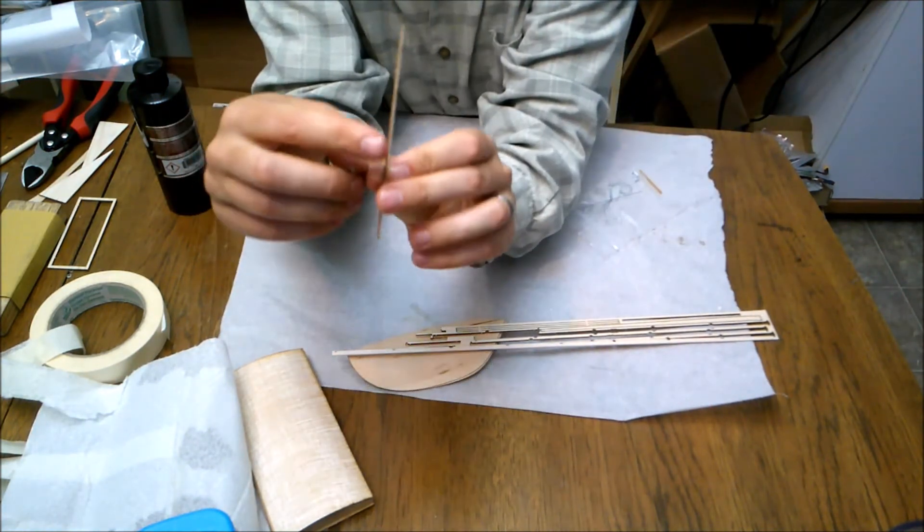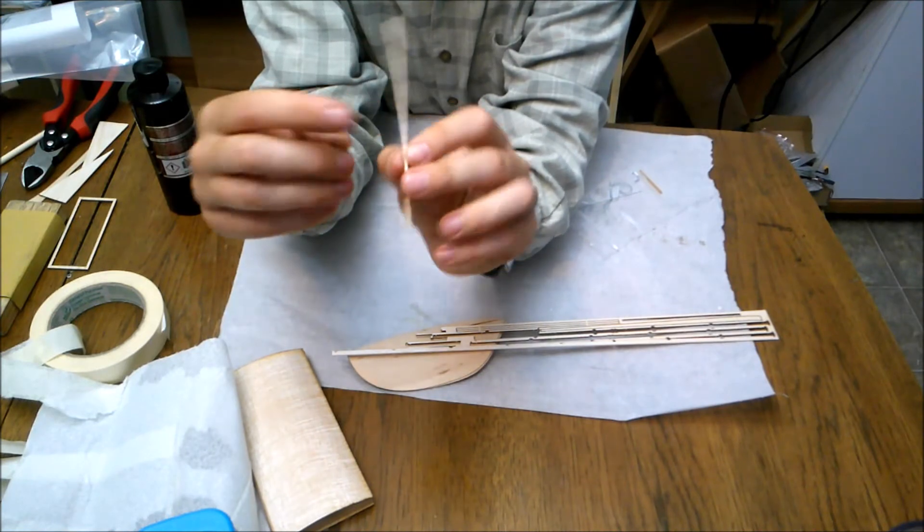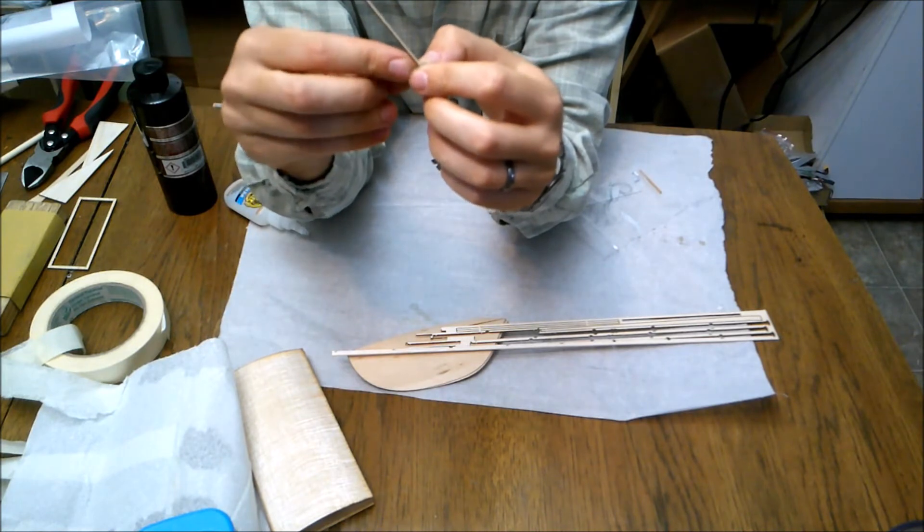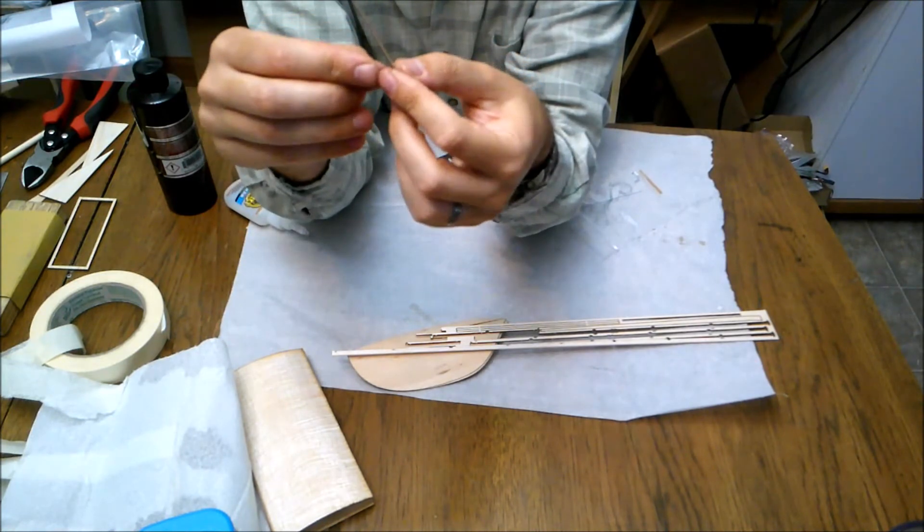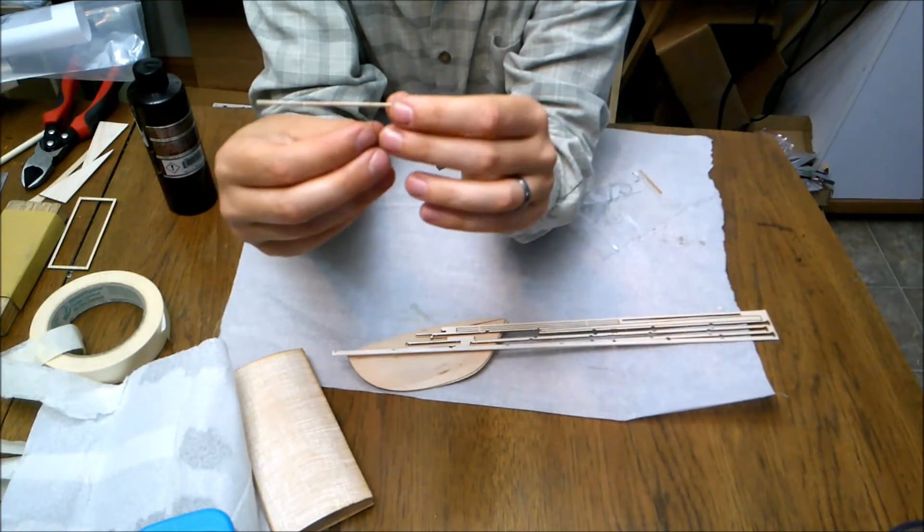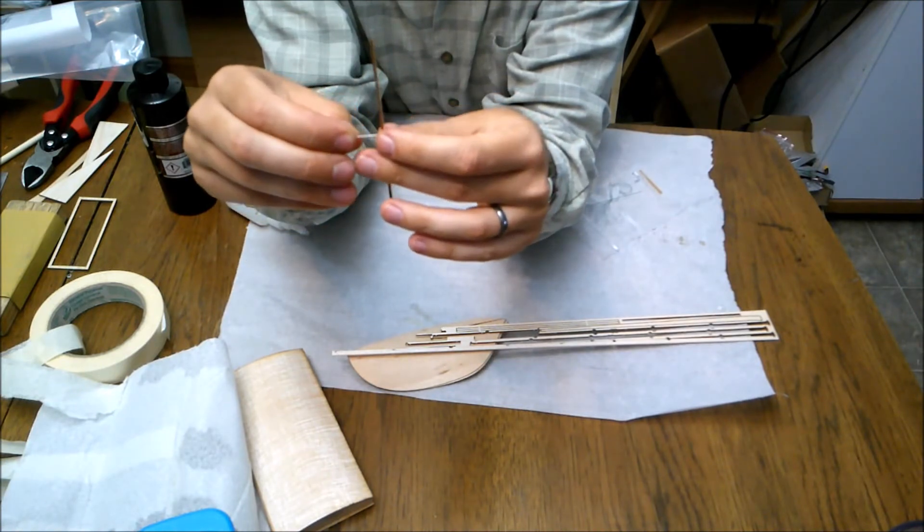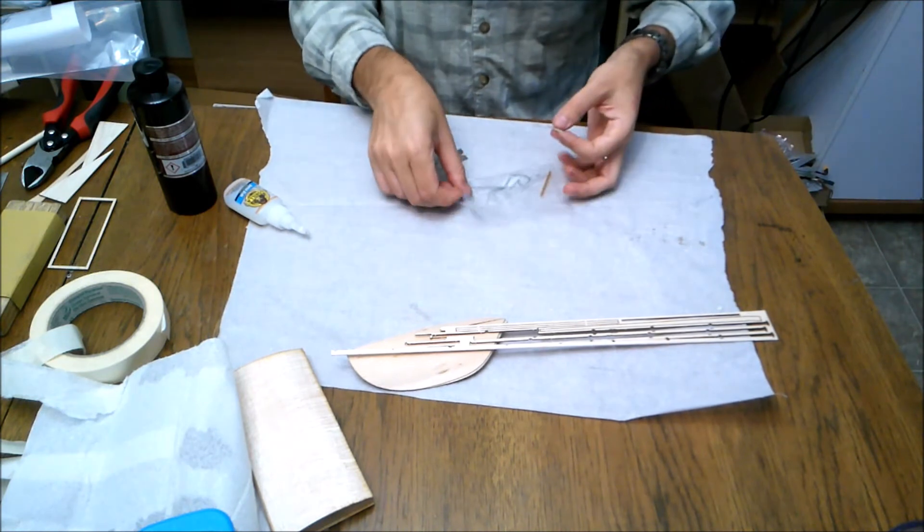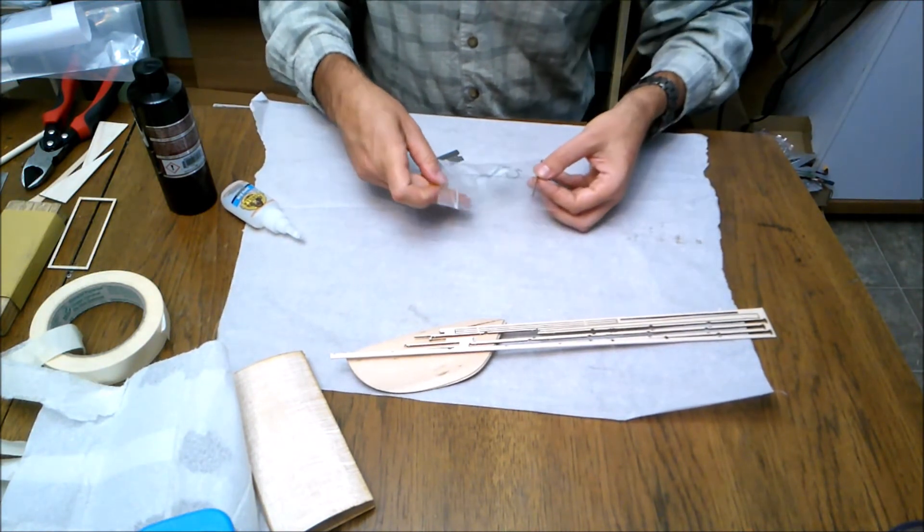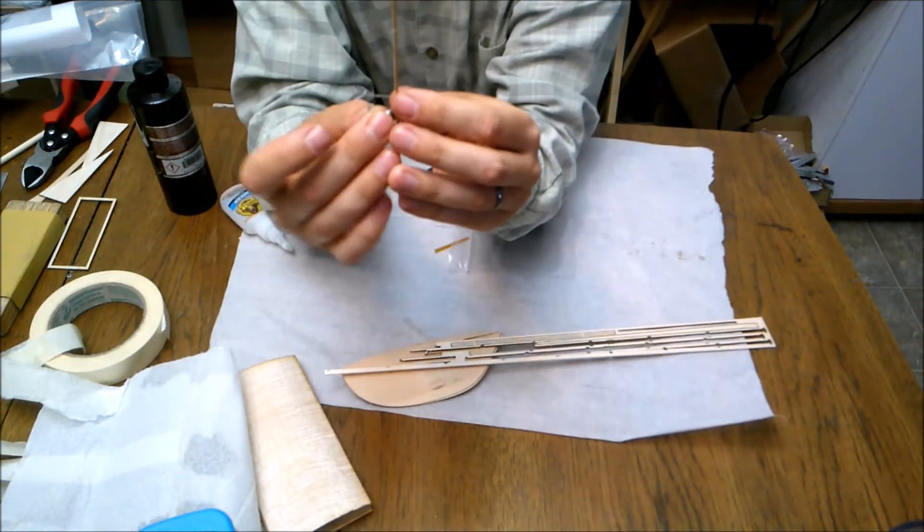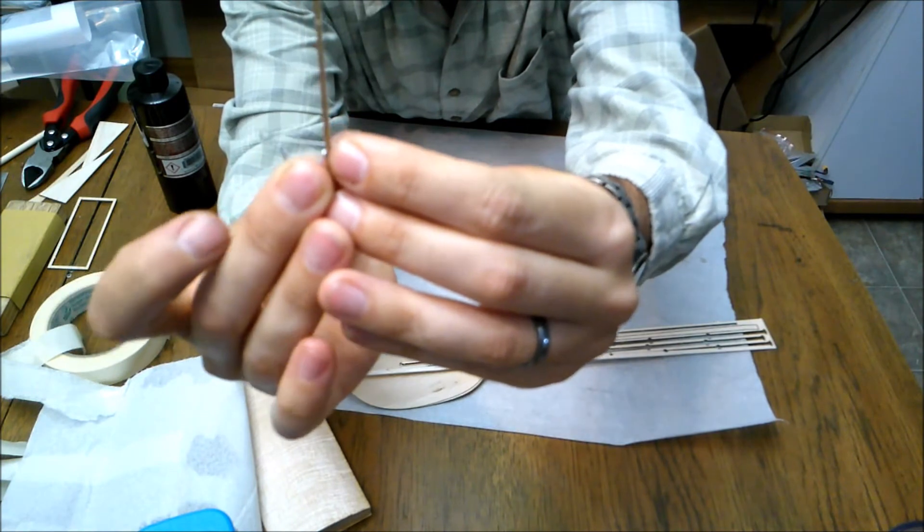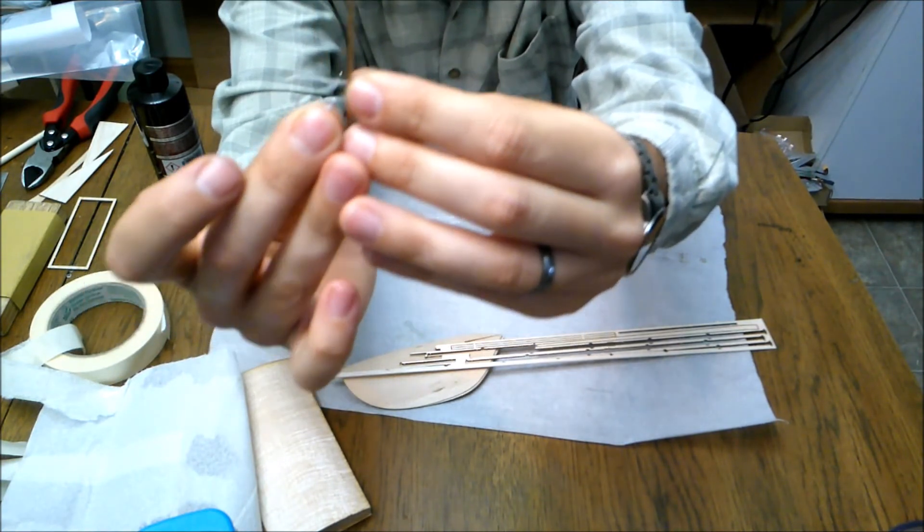Now, on this propeller shaft or propeller spar, like we said, there's that little notch there. That should be a laser cut that goes all the way through. So you should be able to push this through like that. Now leave enough space for the back of the propeller shaft to clear like that.